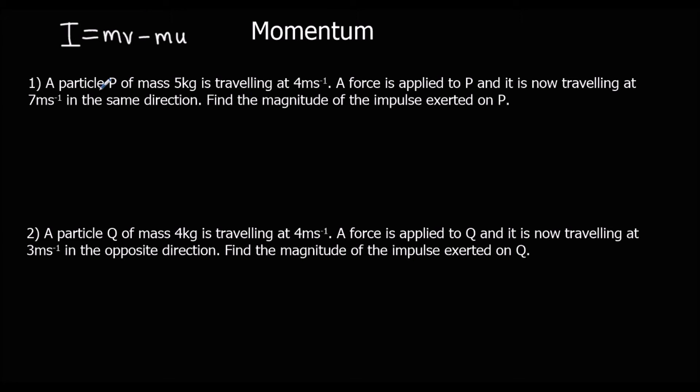Okay, question one. So we've got mass of 5, so M is 5. Traveling at 4 meters per second, so U is 4. A force is applied and it's now traveling at 7 meters per second. So V is 7 in the same direction, so same sign.